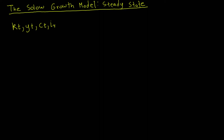In a steady state, all endogenous variables of the model are constant — there's no growth in the model when we're in a steady state. Capital per capita equals some constant value, let's call it K star. Similarly, GDP per capita would be Y star, consumption per capita C star, and investment per capita I star.